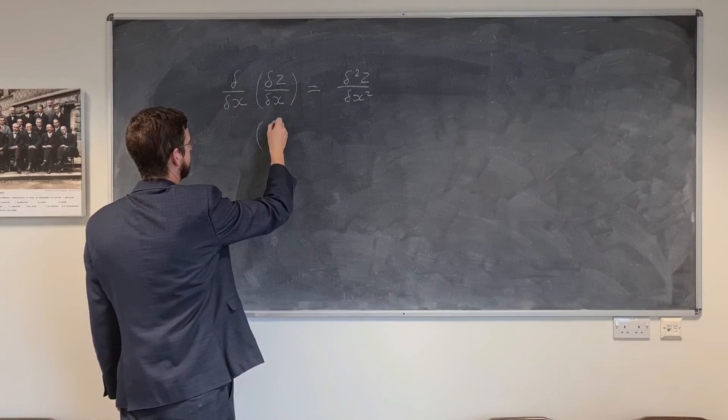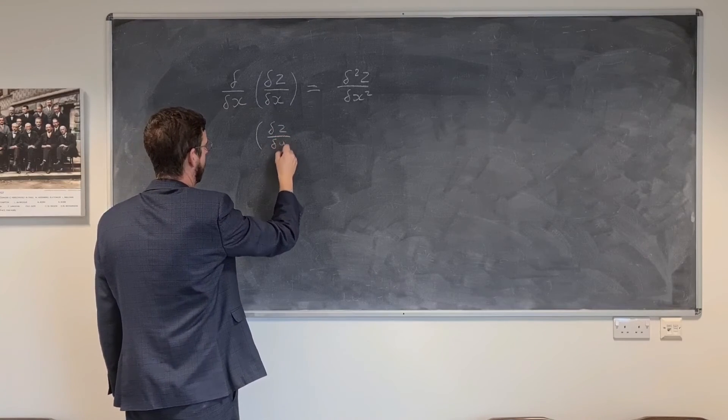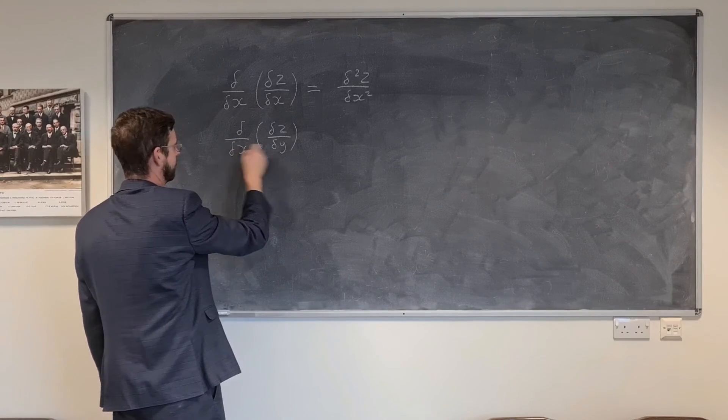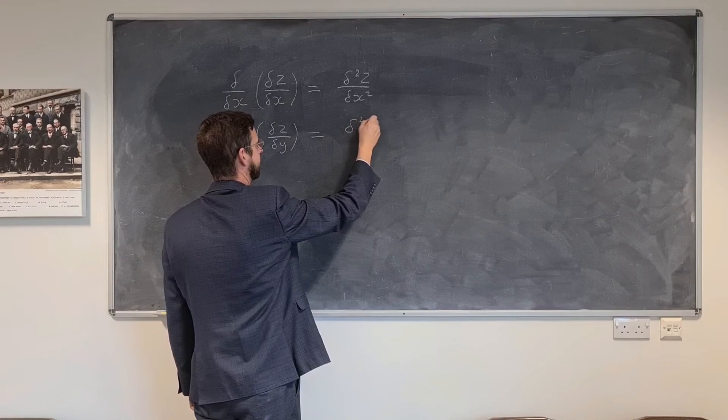then this would be the quite straightforward example of d squared z by dx squared. But now, for example, imagine that we decided to differentiate partially with respect to y instead, but then on the second order we were still differentiating with respect to x.